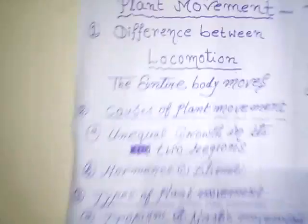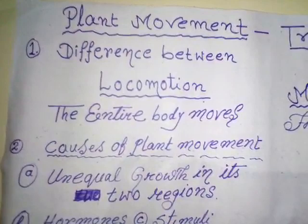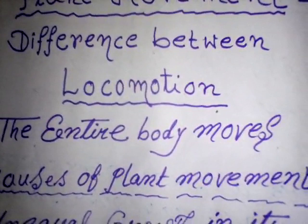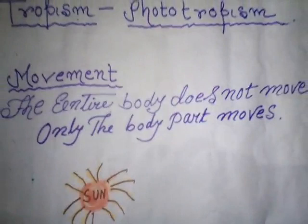What is locomotion? If you are entering inside the room from your balcony, then your whole body is moving from one place to another. This is an example of locomotion. On the other hand, if I am standing here and I am moving my hand, then my entire body is not moving from one place to another. This is an example of movement.